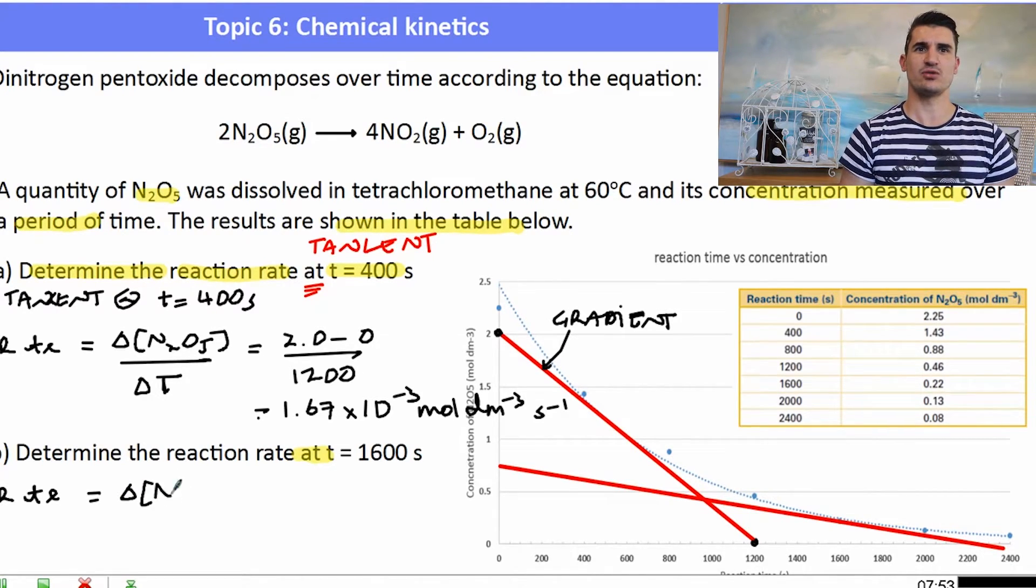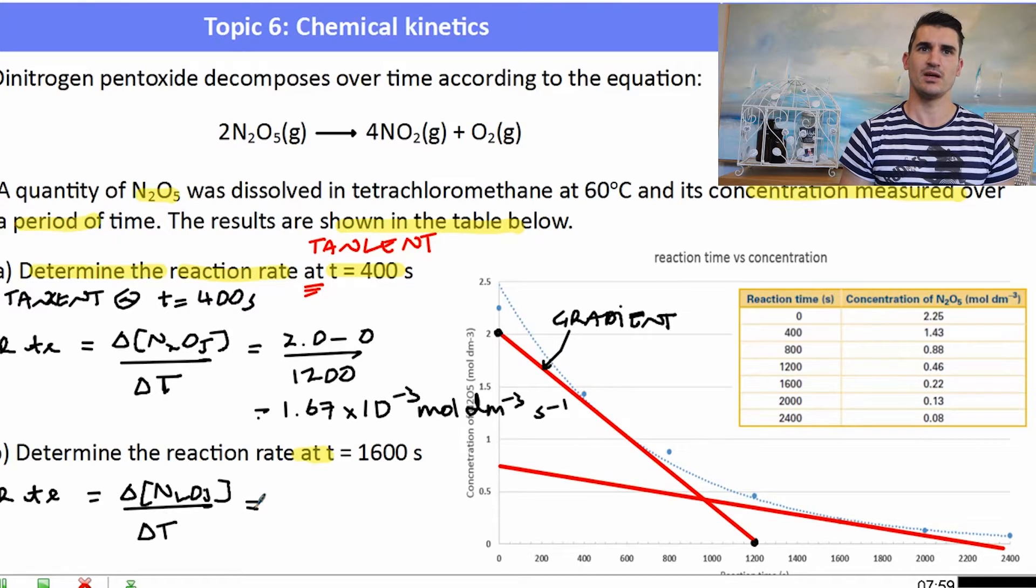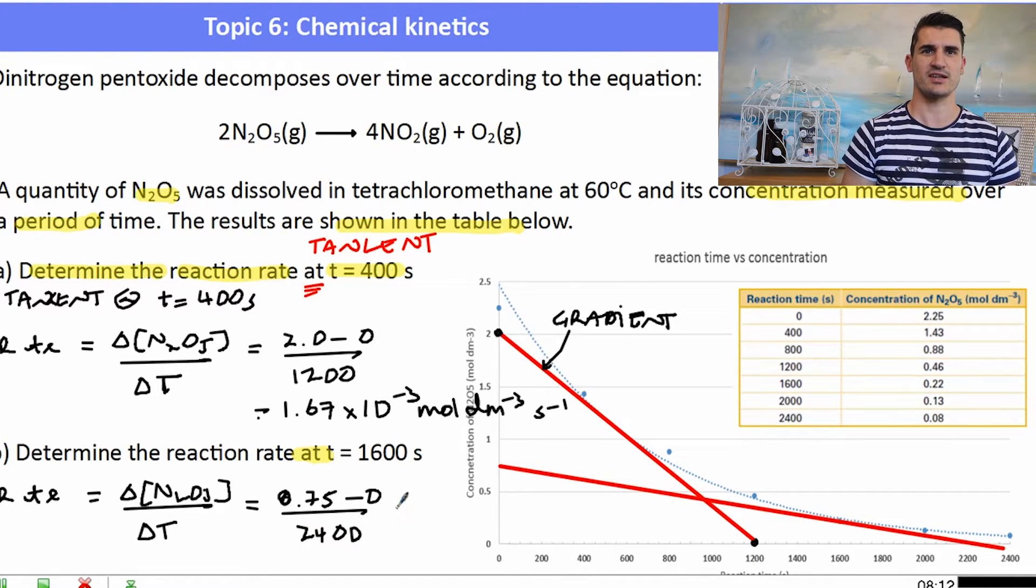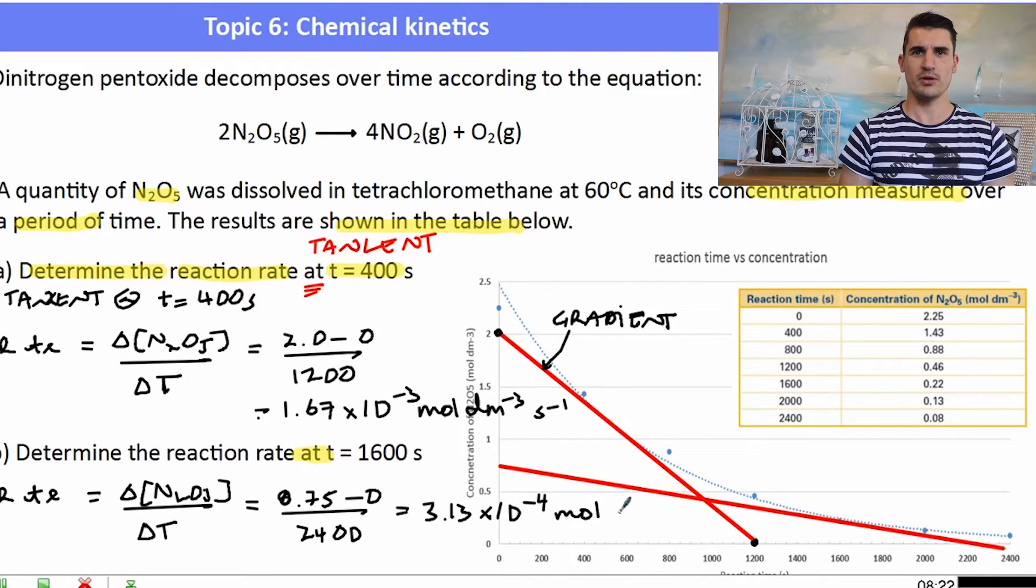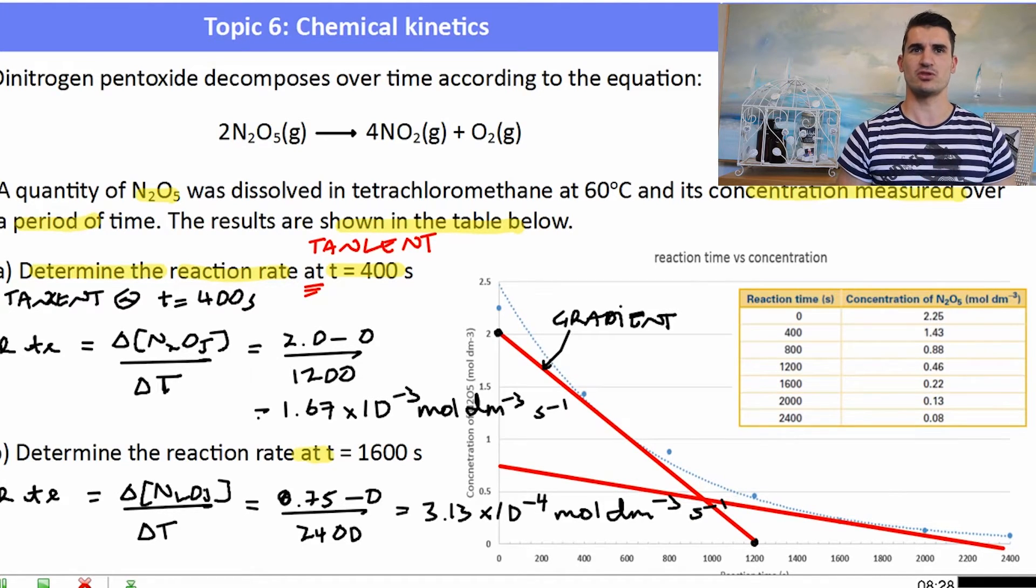Apply the formula rate equals change in concentration over change in time and then we're able to determine the rate at that particular time. So the change in concentration of N2O5 divided by the change in time will give us the rate at that point. So the change in concentration for this one, on my graph it looked to be about 0.75 and then the time period was all the way up to 2400. So it took 2400 seconds. Plugging that into the calculator I got a value of 3.13 times 10 to the minus 4 mole per decimetre cubed per second. Again, the same units. And this kind of makes sense if you have a look at the two values. The first one, it had a greater value so it's got a faster rate. It was at the start of the reaction. The second one has a much slower rate because it's near the end of the reaction.